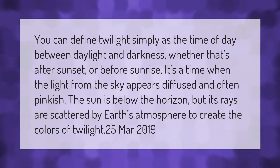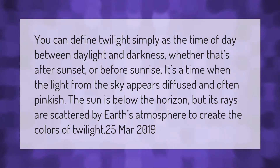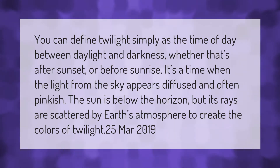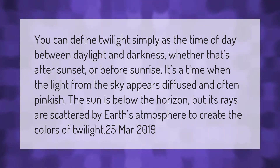You can define twilight simply as the time of day between daylight and darkness, whether that's after sunset or before sunrise. It's a time when the light from the sky appears diffused and often pinkish. The sun is below the horizon, but its rays are scattered by Earth's atmosphere to create the colors of twilight.